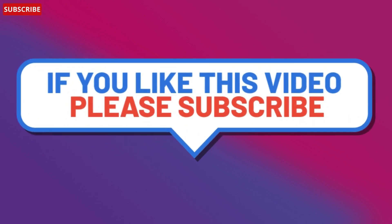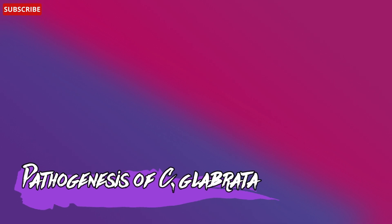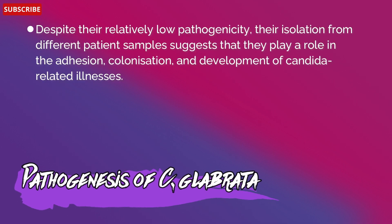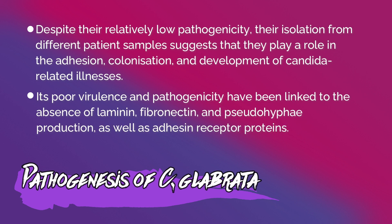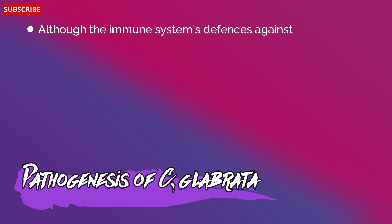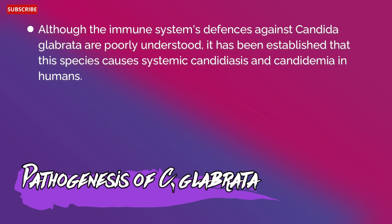Pathogenesis of Candida glabrata: despite their relatively low pathogenicity, their isolation from different patient samples suggests they play a role in colonization and development of Candida-related illnesses. Its poor virulence has been linked to the absence of laminin, fibronectin, and pseudohyphae production, as well as adhesion receptor proteins. Although the immune system's defenses are poorly understood, it has been established that these species cause systemic candidiasis and candidemia in humans.